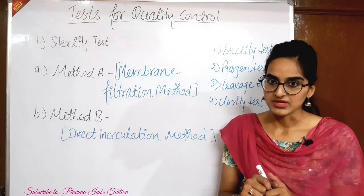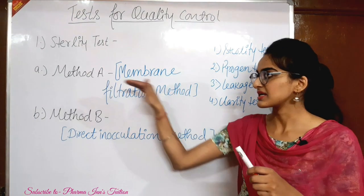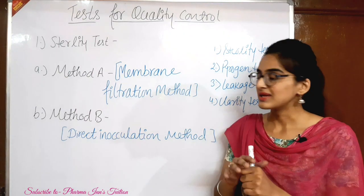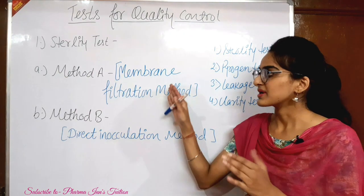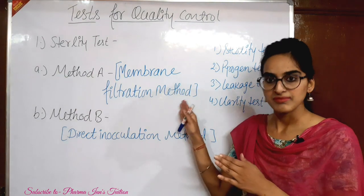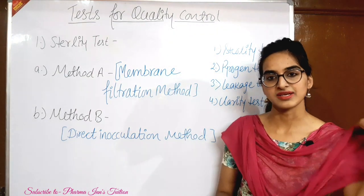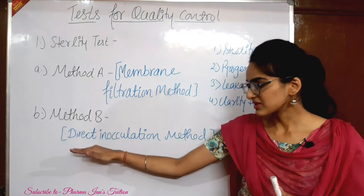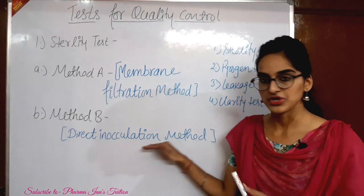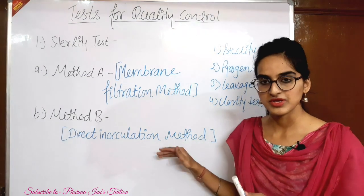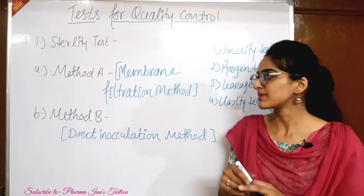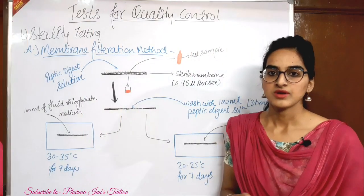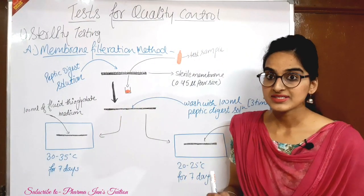This is sterility testing. There are two methods. The first method is called Method A, which is mainly called the membrane filtration method. The second method is called the direct inoculation method. Let's talk about the membrane filtration method.